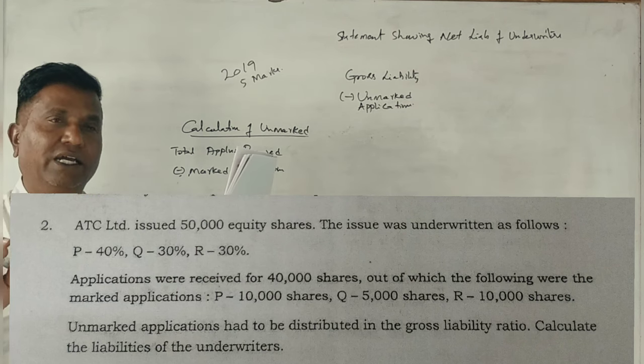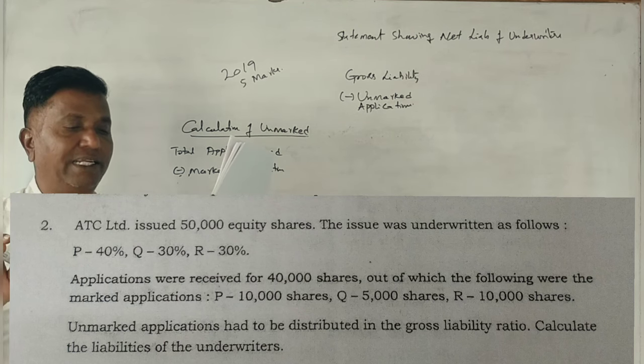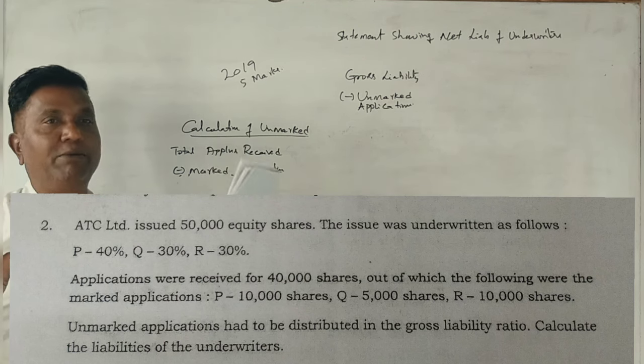Out of which following were marked applications: P 10,000, Q 5,000, and R 10,000 shares. Unmarked applications had to be distributed in gross liabilities ratio. Calculate liabilities of the underwriters.